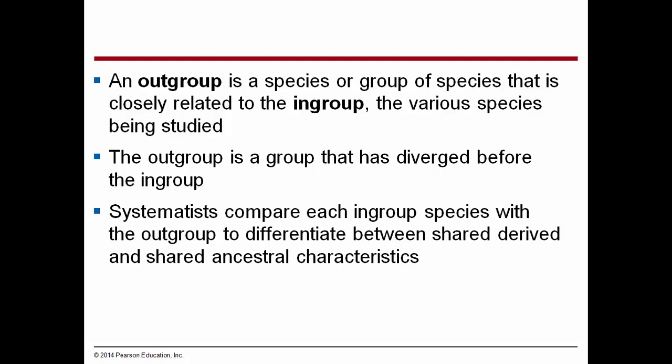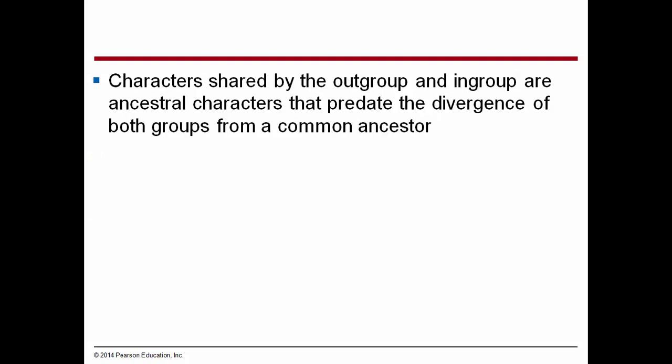An outgroup is a species or group of species that is closely related to the in-group, the various species being studied. An outgroup is a group that has diverged before the in-group. We have to know something about the systematics of the group before we can identify an outgroup. Systematists compare each in-group species with the outgroup to differentiate between shared derived and shared ancestral characteristics. Characters shared by the outgroup and in-group are ancestral characters that predate the divergence of both groups from a common ancestor.